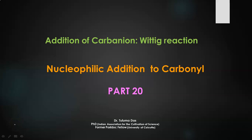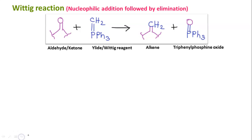Hello friends. Just like the previous part, this is also addition of carbanion — a nucleophile with negative charge over the carbon atom — that will be used for addition to a carbonyl group. So what is the Wittig reaction? It is nucleophilic addition followed by elimination. After nucleophilic addition there is a further step, which is elimination.